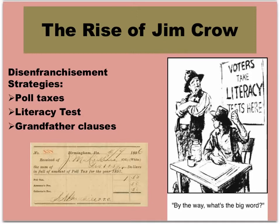The 1890s saw a huge effort to get around the 15th Amendment. Poll taxes, property qualifications, and literacy or understanding tests were some ways to disenfranchise people. Although applied unequally to blacks and whites, they did affect poor white voters as well. So grandfather laws were passed, which basically said you can vote if your grandfather voted before 1865 — and obviously, no black person's grandfather voted before 1865.